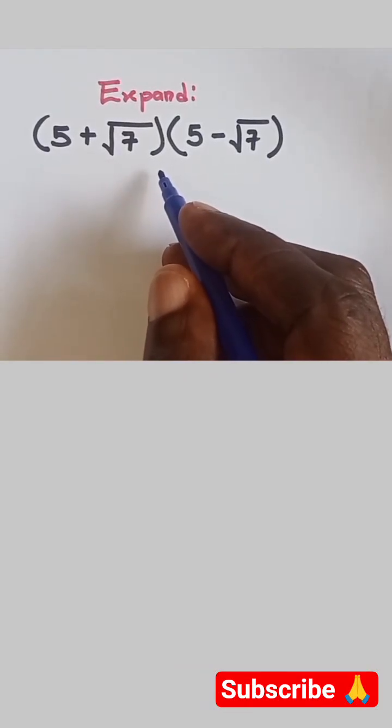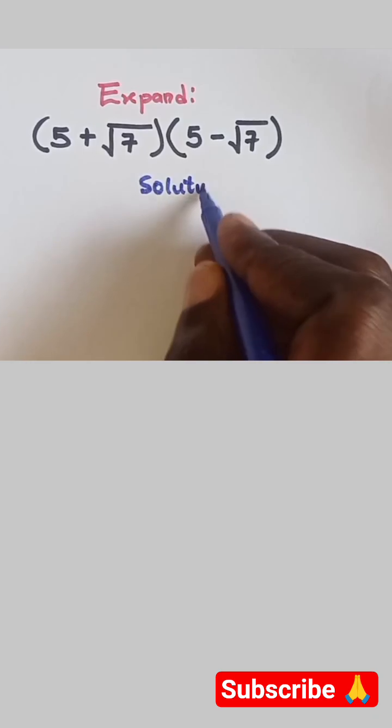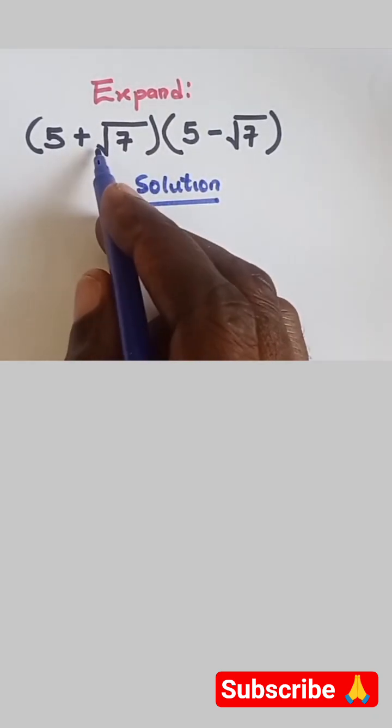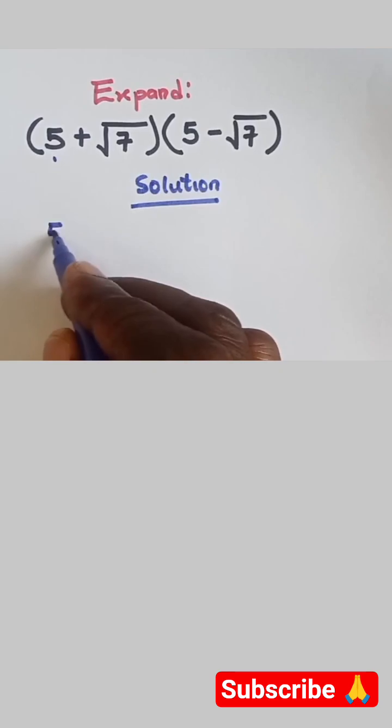Hi guys, welcome back to my channel. Now let's quickly expand this radical expression. We have (5 + √7)(5 - √7). Let's pick this 5 and...